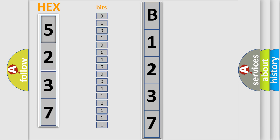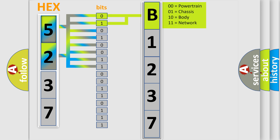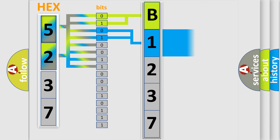The error code is split into two bytes consisting of 16 bits. One bit is the basic unit that each computer works with. The bit has two logical states: zero, low level, and one, high level. By combining the first two bits, the basic character of the error code is expressed.